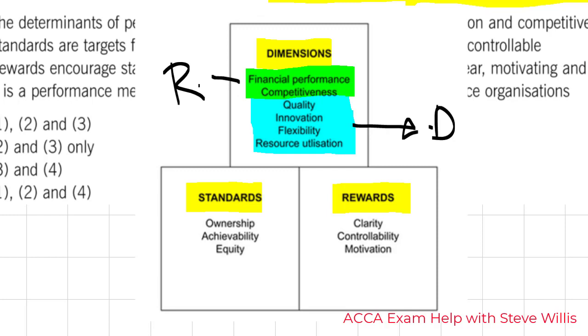Once we've identified our dimensions, we measure performance with standards. Standards should be assigned to managers. If you don't assign the metric to a manager, no one will look after it. No one will make sure that it's improving. That's the ownership part. Of course, the standard or the target should be achievable. If it's not achievable, you won't work hard to attain your results.